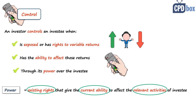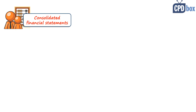The holder must have the practical ability to exercise that right. The investor must have a current ability to exercise these rights, and not some potential ability in the future. IFRS 10 suggests that more than one factor needs to be considered, and there is comprehensive guidance in IFRS 10 about the existence and non-existence of control under various circumstances.